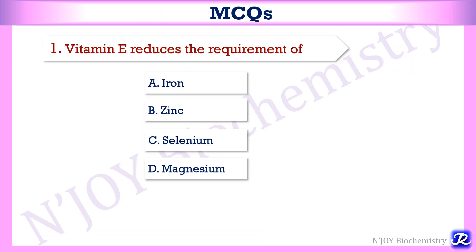In today's video we have covered dietary sources, RDA, chemistry, biochemical functions, deficiency manifestations, and causes of vitamin E. Now we will see some MCQs related to vitamin E. The first MCQ: vitamin E reduces the requirement of — iron, zinc, selenium, or magnesium? Since vitamin E has a sparing effect on selenium, the answer is selenium.